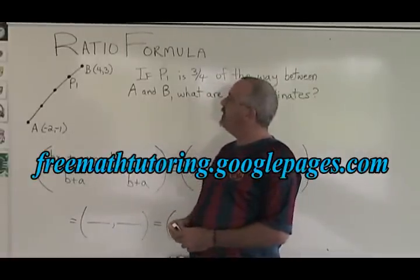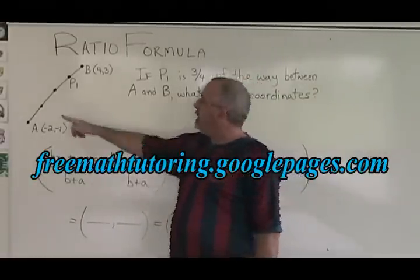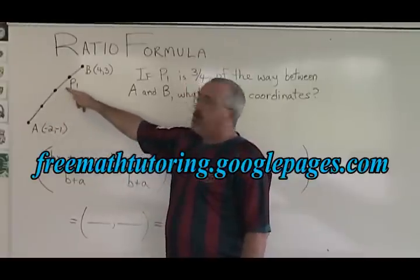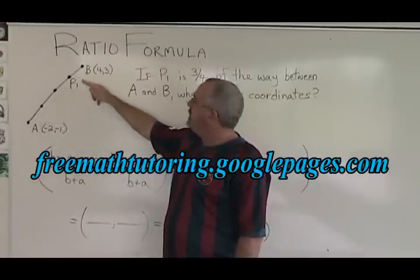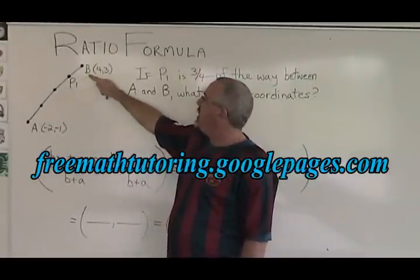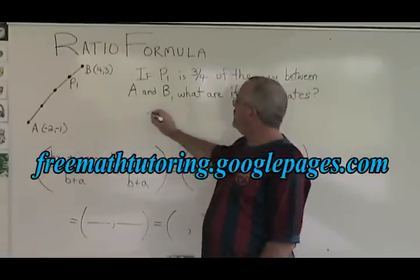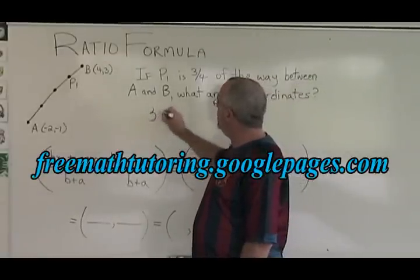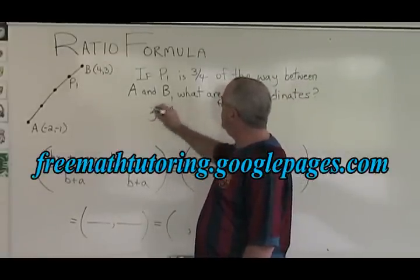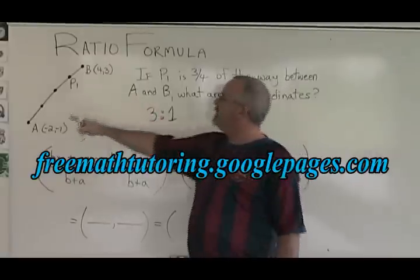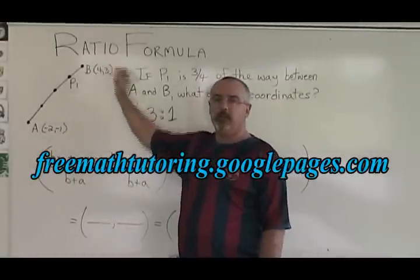The first thing we have to do is calculate the ratio of the distance already covered from A to P1 to the distance still to cover between P1 and B. That means there is a 3:1 ratio between the distance already covered and the distance still to cover.